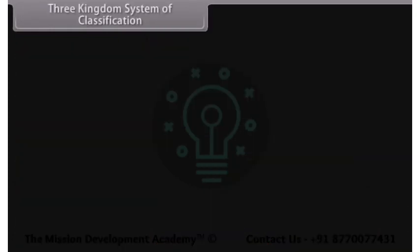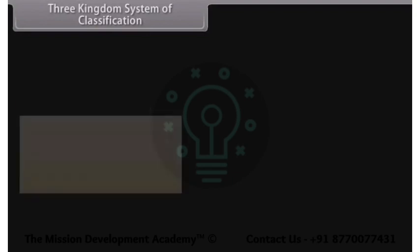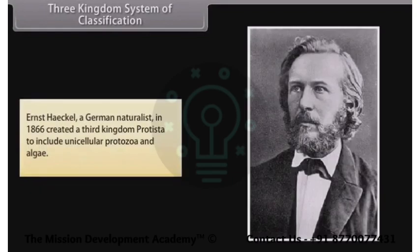In the Three Kingdoms System of Classification, Ernst Haeckel, a German naturalist, in 1866 created a third kingdom, Protista, to include unicellular protozoa and algae.